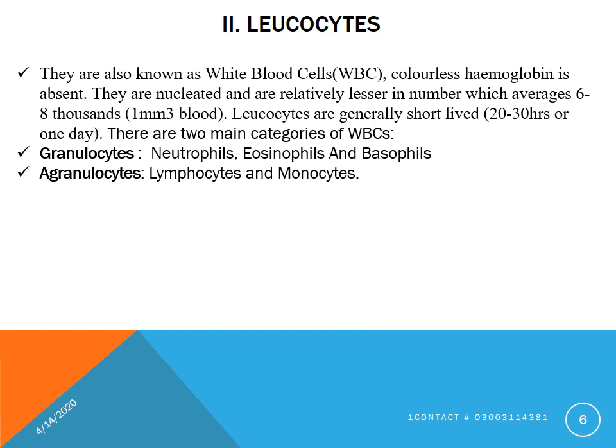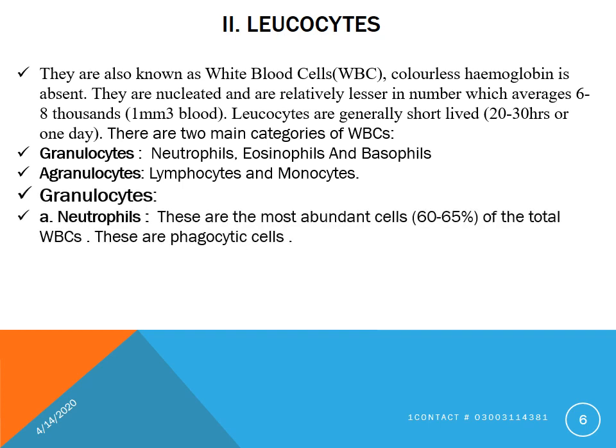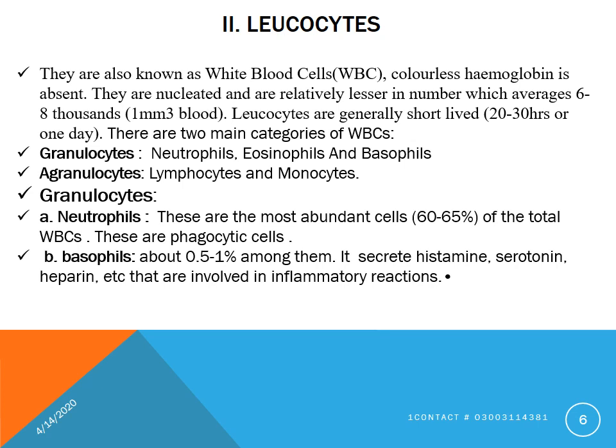The other category is agranulocytes, including lymphocytes and monocytes, also known as mononuclear cells. Granulocytes possess a many-shaped nucleus, hence called polymorphonuclear. Agranulocytes have a single rounded nucleus and their cytoplasm does not possess granules. Neutrophils are the most abundant WBCs, about 60 to 65%. These are phagocytic in nature. Basophils make up about 0.5 to 1% and secrete histamine, serotonin, and heparin, involving inflammatory reactions.